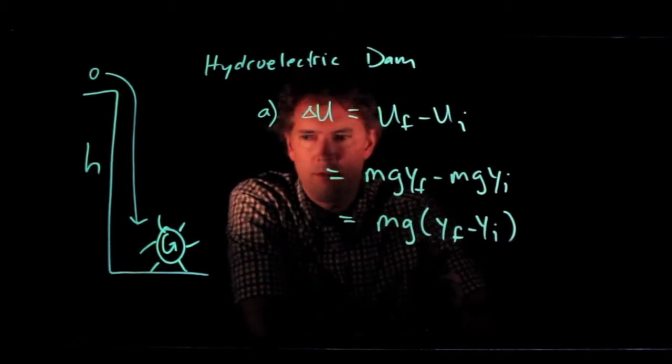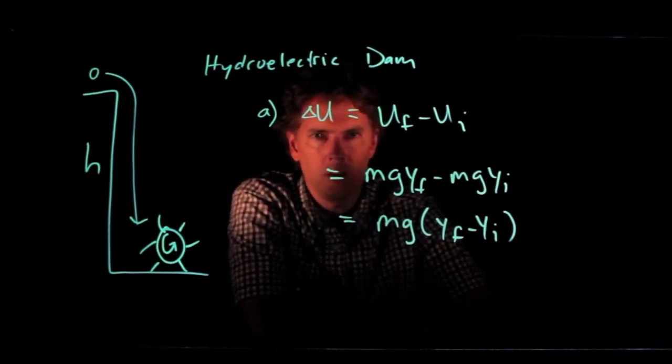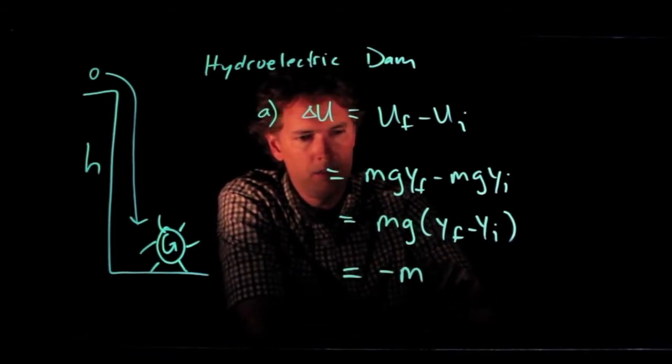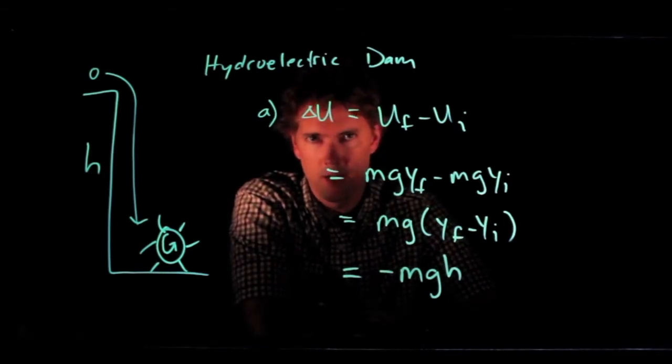y final is at the bottom, it's zero. y initial is whatever they give us, and so it is minus mgh. That's the change in gravitational potential energy.